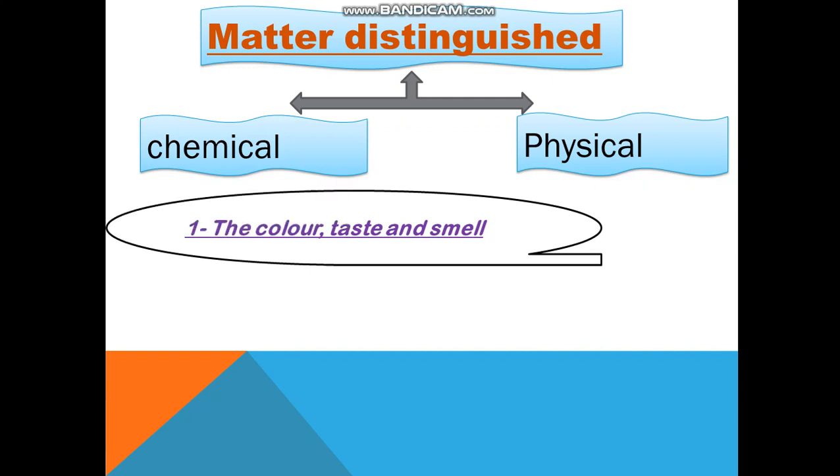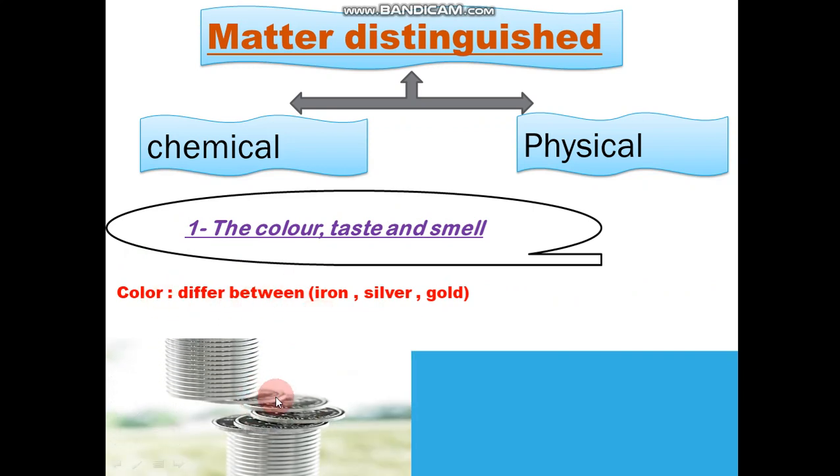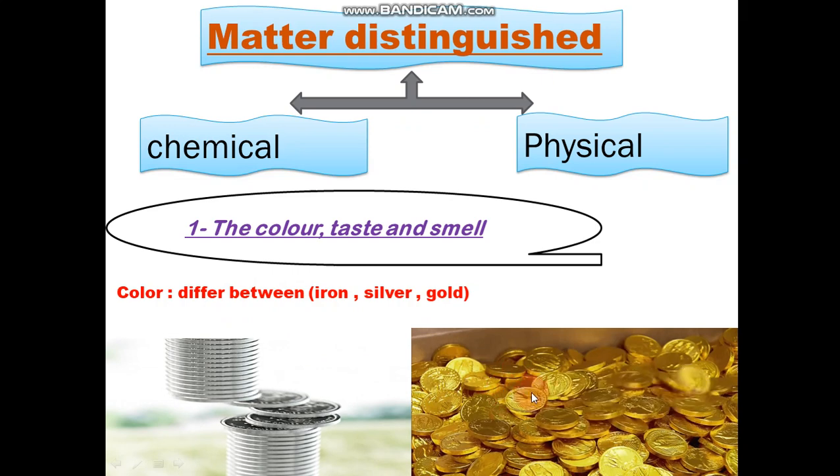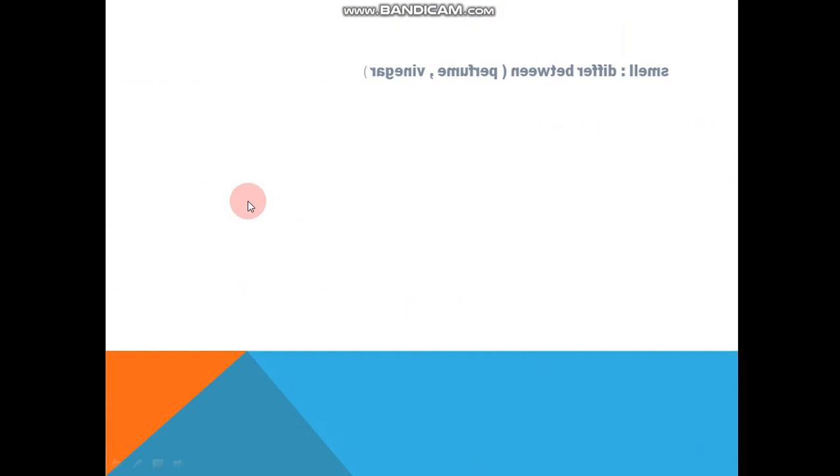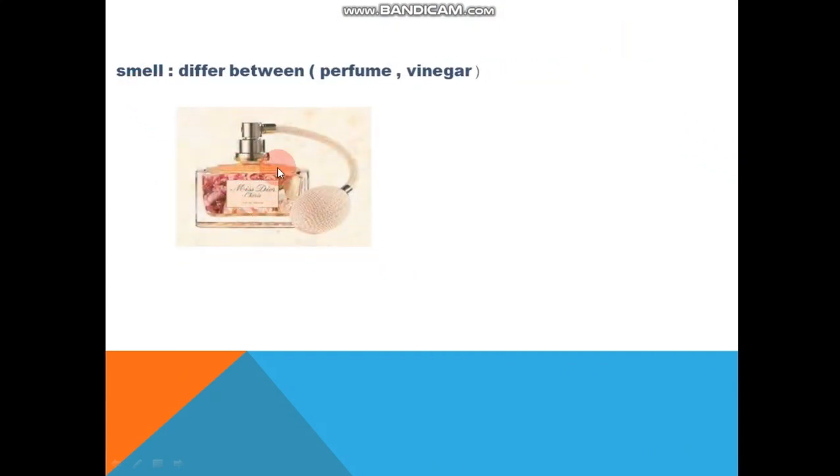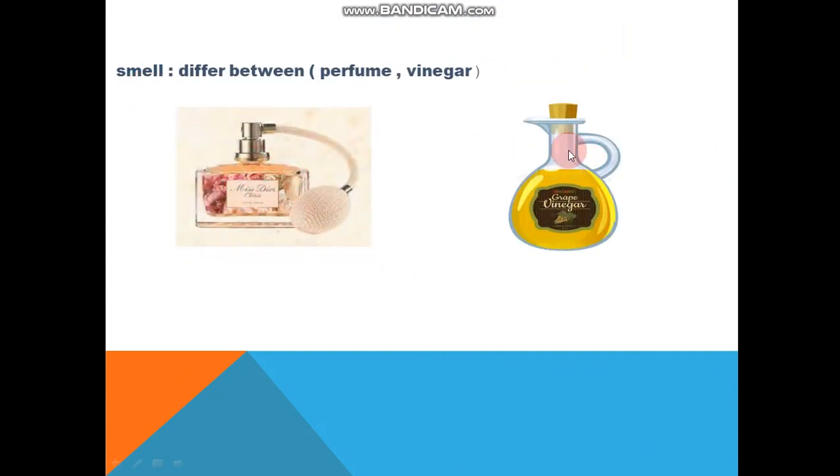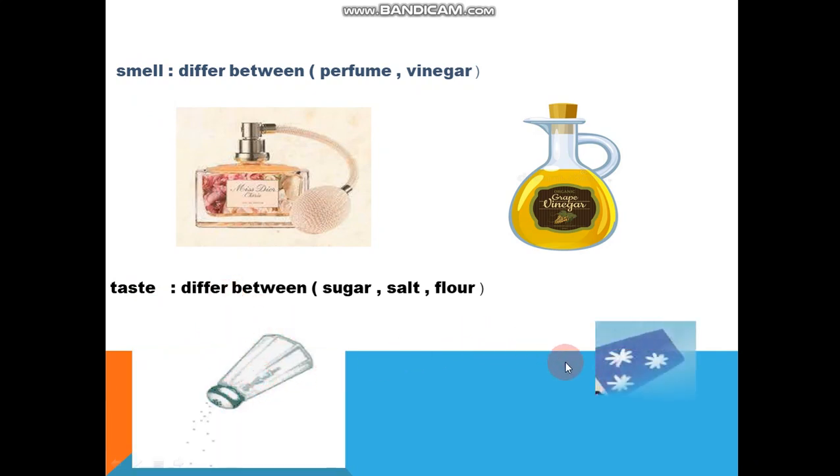Physical property: the color, taste, and smell. Color: I can differ between silver and gold by using color. Smell: I can differ between perfume and vinegar by smell. Taste: I can differ between salt and sugar by using taste.